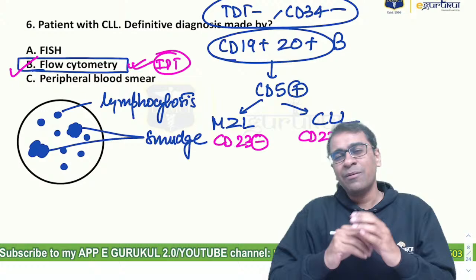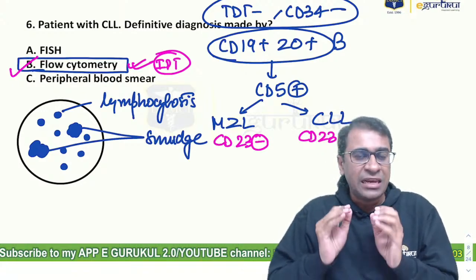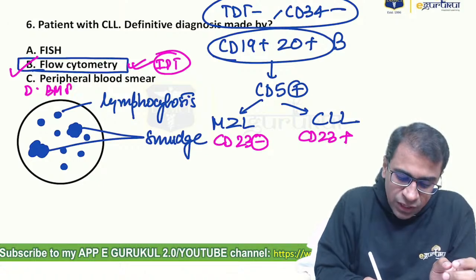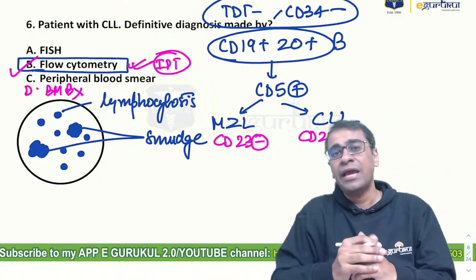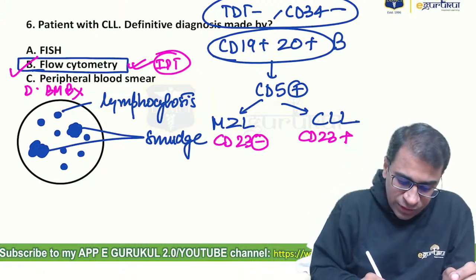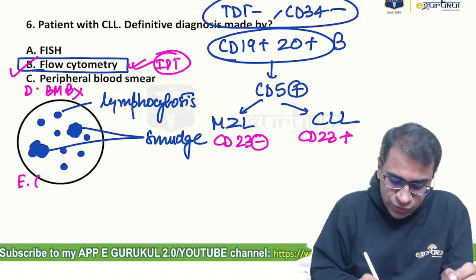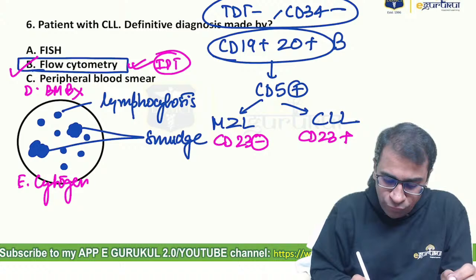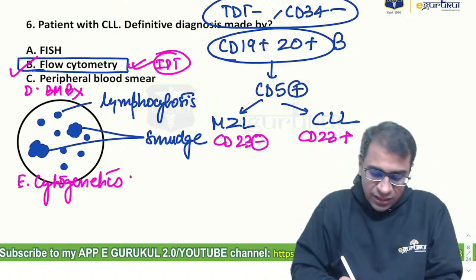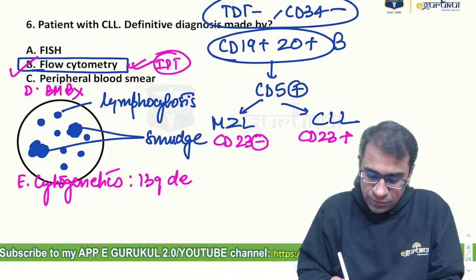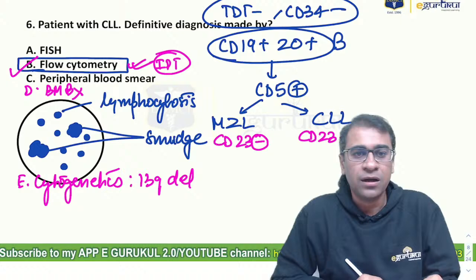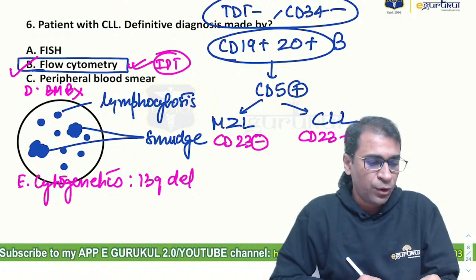Why not bone marrow biopsy? Bone marrow biopsy has a very limited role in CLL diagnosis. Additional genetic findings in CLL include 13q deletion and translocation 11 with 14, but the definitive answer remains flow cytometry. Whether the question asks for 'next step' or 'definitive test,' the answer is flow cytometry.